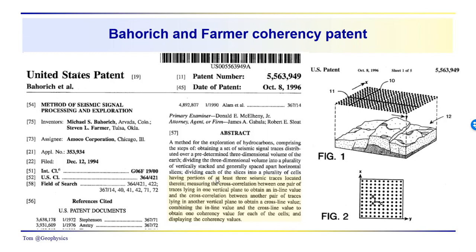But notice that what they are referring to, they basically define the process. And they say that you've got this volume of seismic data, spatially sampled and temporally sampled, and from this volume, you want to take at least, or you want to have at least three seismic traces located therein, measuring the cross-correlation between one pair of traces lying in a vertical plane, as we see here.